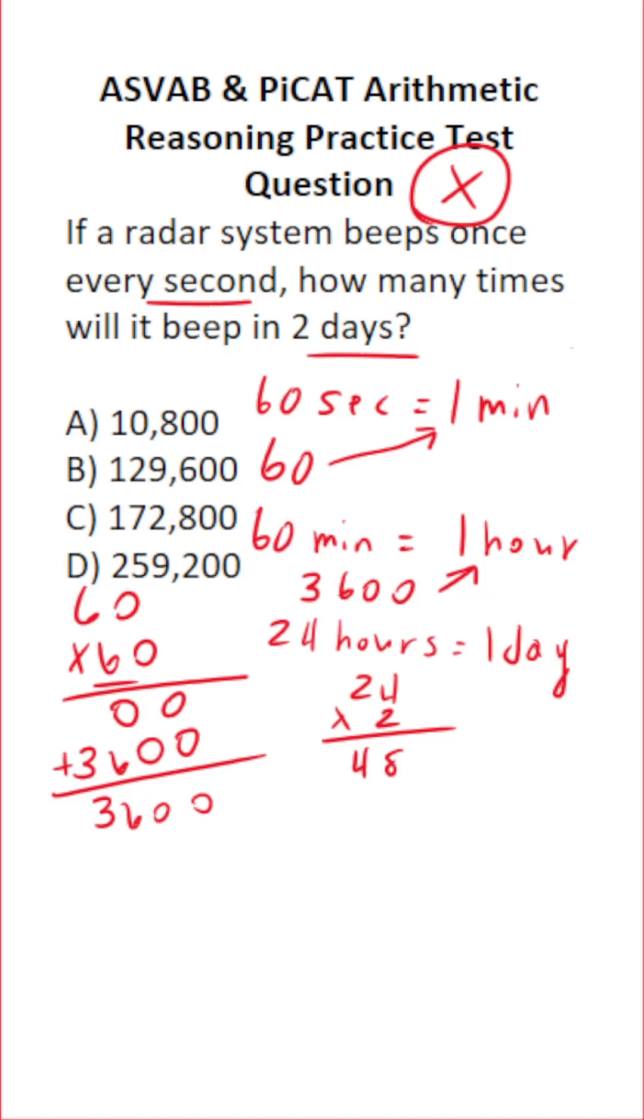All right. So again, this radar system is beeping 3,600 times per hour for a total of 48 hours. So let's go ahead and do this final part here. We're going to do 3,600 times 48. And this will give us our answer.